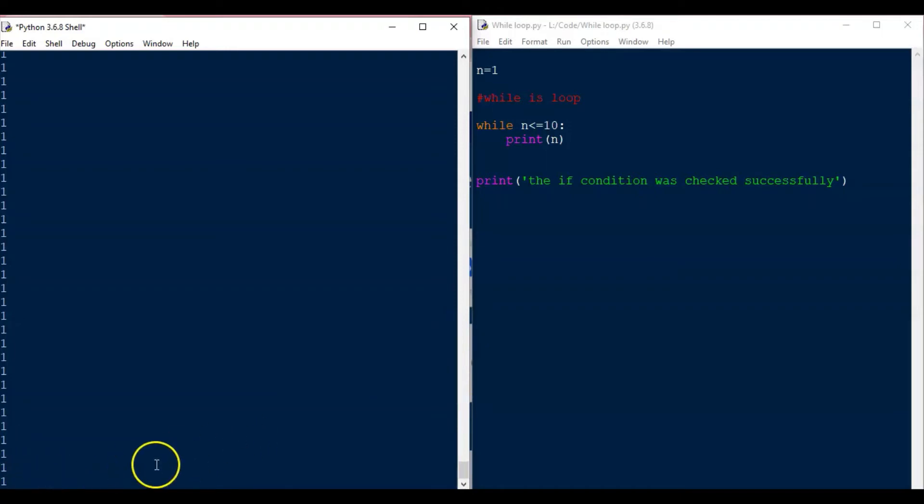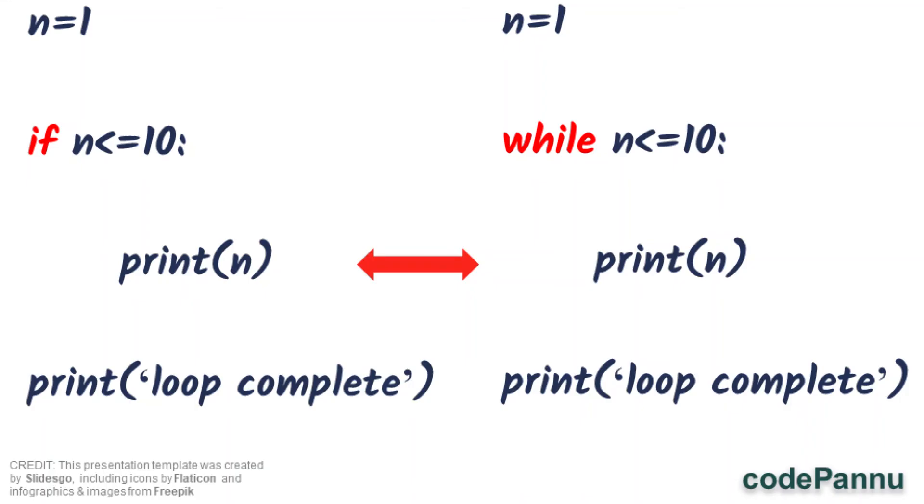In the first statement, we have given n is equal to 1. In the second statement, we are checking for the condition if n is less than 10. The condition is true because 1 is lesser than 10. Python will go to this print statement and print the value of n. Up to this point, the if statement and while statement works the same way.